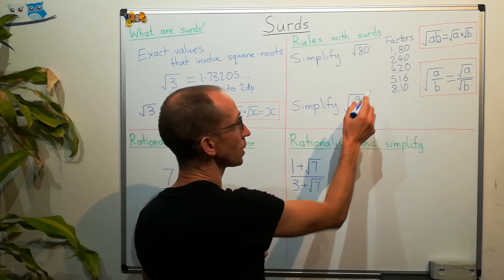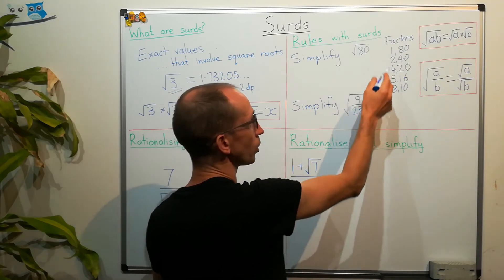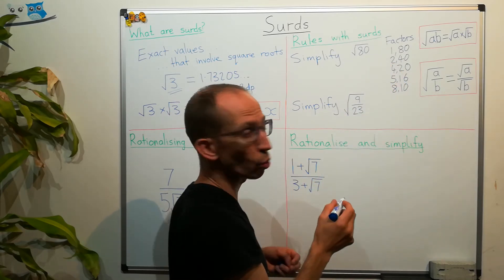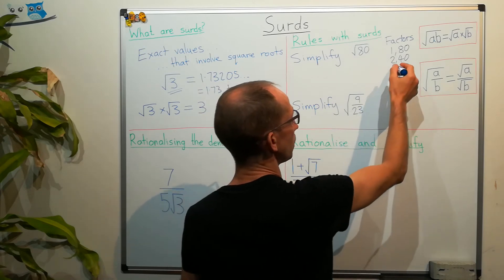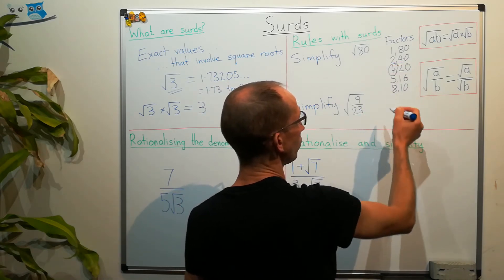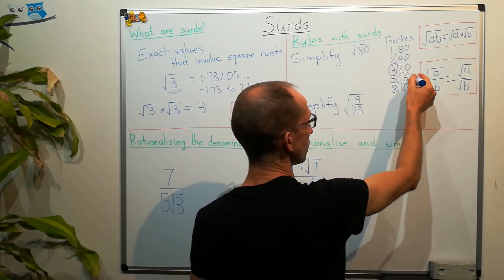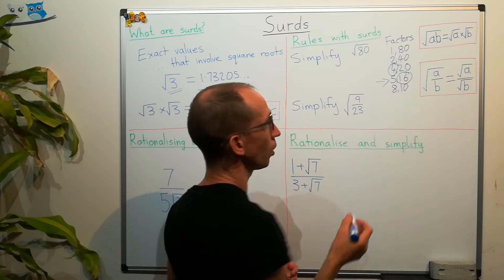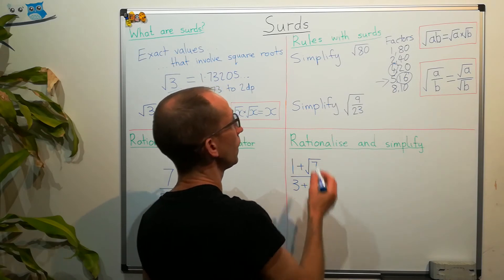So, it might not be obvious how this is going to help. But what we want to do is look for any of these factor pairs that have got square numbers in them. So we've got 4 a square and also 16. And we're going to take the factor pair which has got the largest square number.